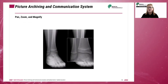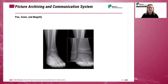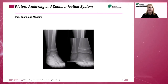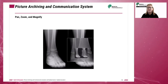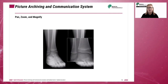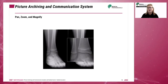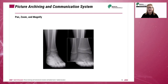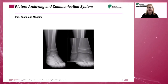Pan, zoom, and magnify are functions used by the radiologists to increase the size of a specific area. The magnify function is used to enhance the square area of an image; this square can be moved around the image to see various areas enlarged. Zoom and pan functions are usually used together — first the image is zoomed to the desired magnified level, then the pan icon is activated so that the zoomed portion can be moved around, allowing the radiologists to view different areas of the image.